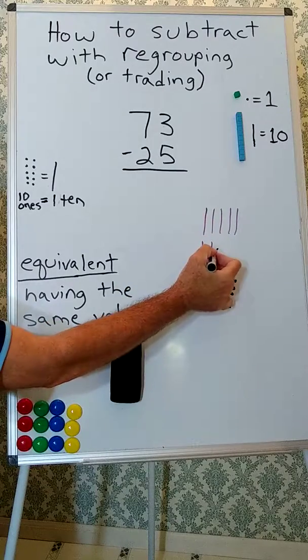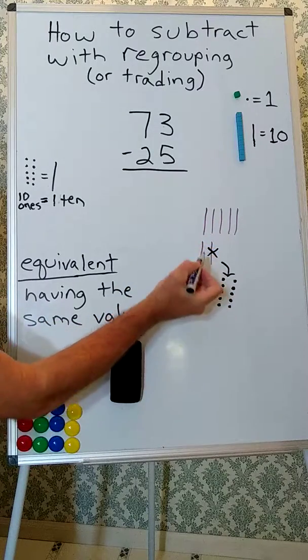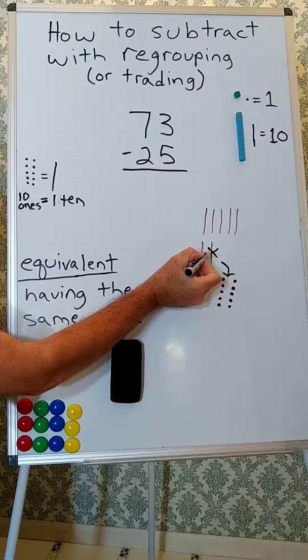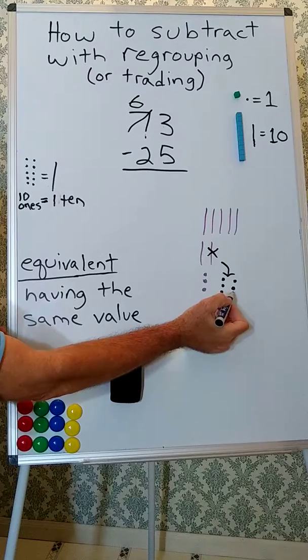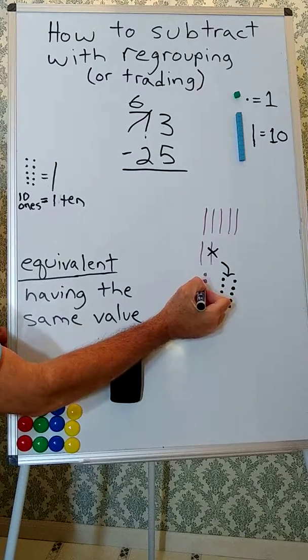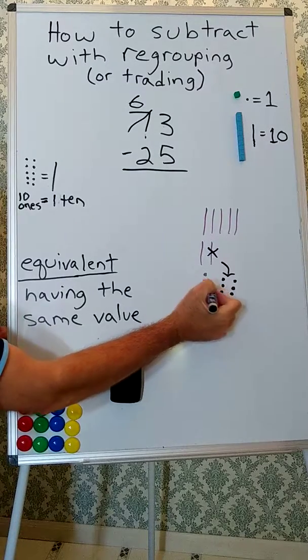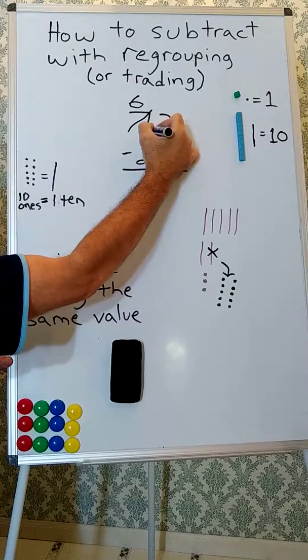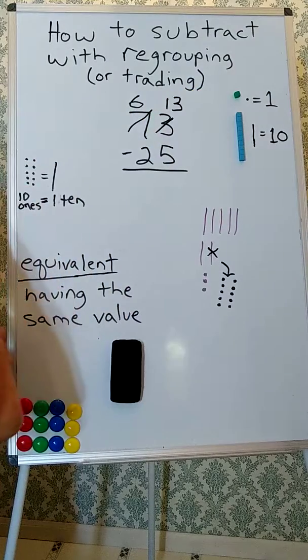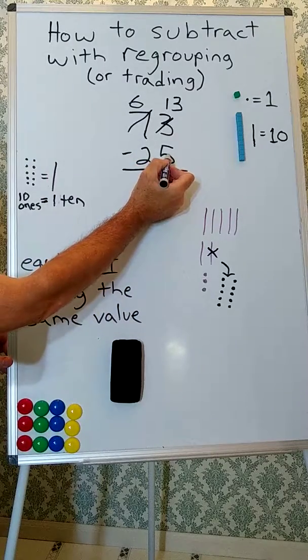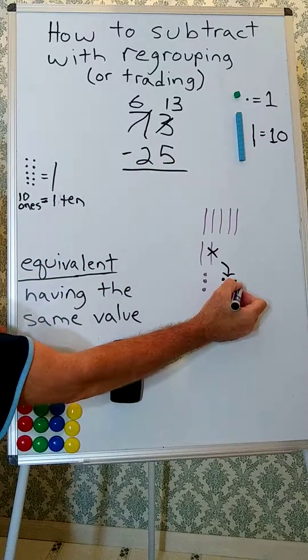Now we need to write down what we did. What did we do? We first traded a ten. So that left us with 6 tens, and we got 10 ones. We already had 3 ones. 10 plus 3 is 13. So now we have 13 ones, and now we have enough ones to take 5 ones away.